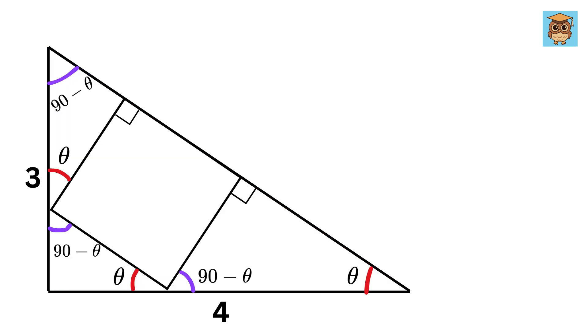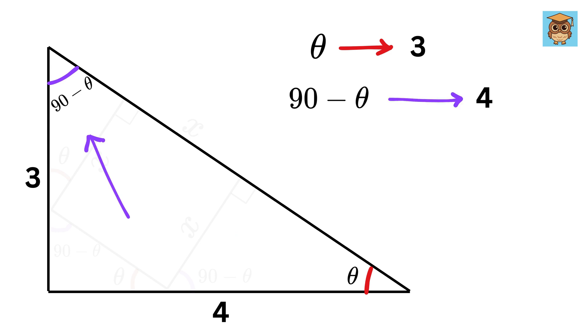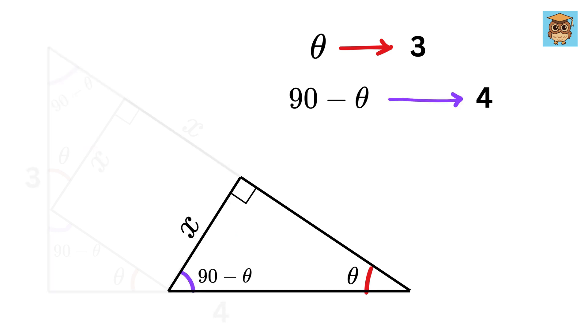Now, let us label the side of this square as x. So, all of them will be x as well. Look here, the angle opposite to side 3 is theta, and that opposite to 4 is 90 minus theta. Therefore, since this side is opposite to angle theta, it will be similar to 3, and thus this side will be 4 by 3 times x.